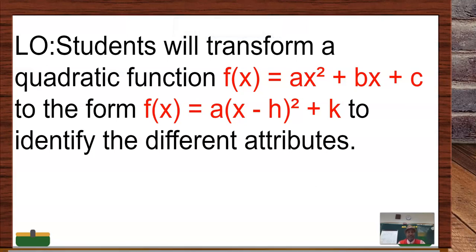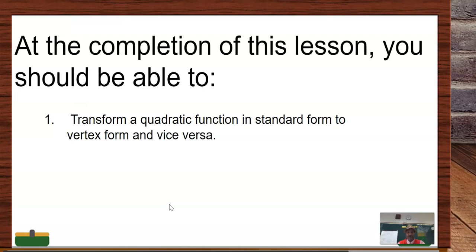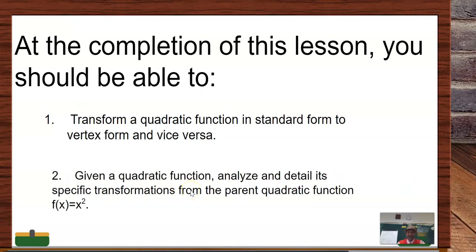Students will transform a quadratic function f(x) = ax² + bx + c to the form f(x) = a(x - h)² + k to identify the different attributes. At the completion of this lesson, you should be able to transform a quadratic function in standard form to vertex form and vice versa, and analyze its specific transformations from f(x) = x². This video is in two parts, and this is part one.